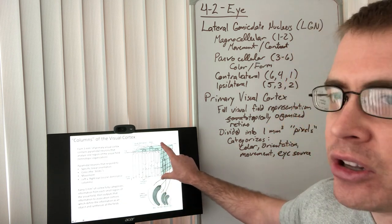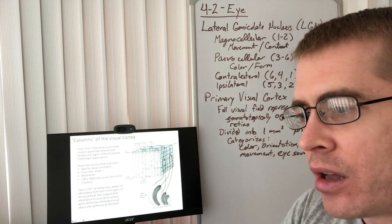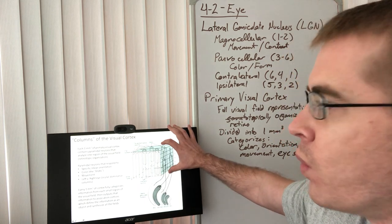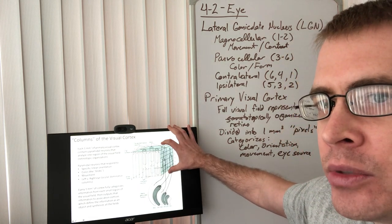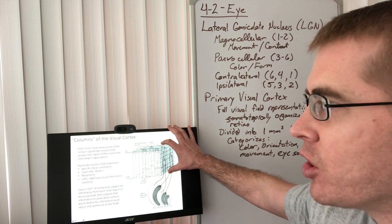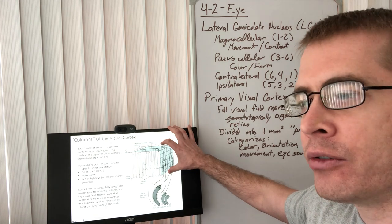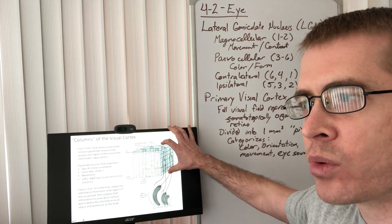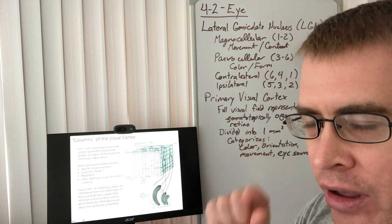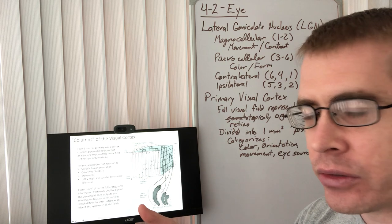Still within the primary cortex V1, around the calcarine sulcus, each one millimeter cubed region of the primary visual cortex has all it needs to process every aspect of the visual information we're getting from one pixel — one small area of our visual field, of our retinal fields.